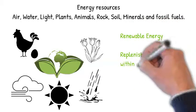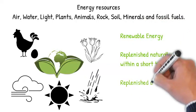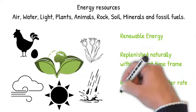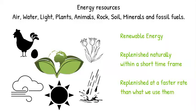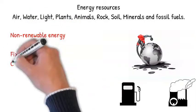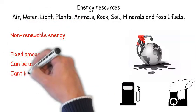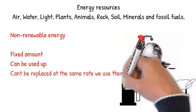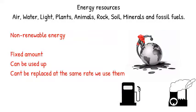So to recap: renewable energy is that which is replenished naturally within a short time frame, which means it's replenished at a rate faster than what we are using it up — examples are things like the light from the sun that we can't use up. Non-renewable energy resources have a fixed amount, they can be used up, and they can't be replaced within a decent time frame.